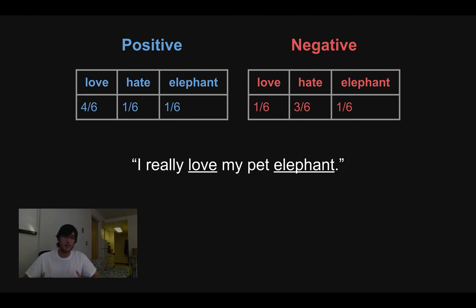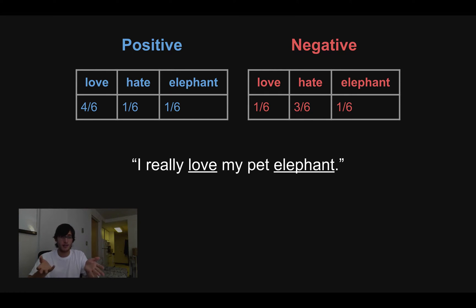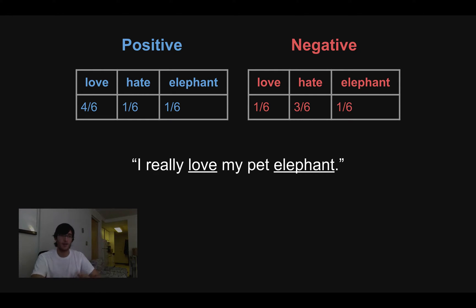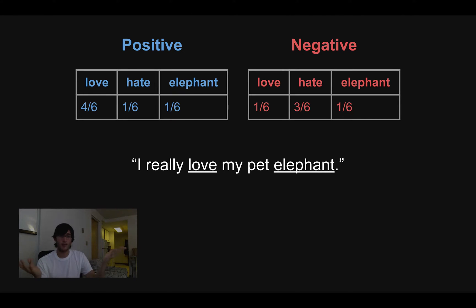Now let's work on some sentences and use this classifier to decide if they're positive or negative. Let's look at the sentence 'I really love my pet elephant.' This sentence has the word 'love' and 'elephant,' and it doesn't have the word 'hate.' Here's how we decide: first, we assume the sentence is positive and ask, what's the probability of getting a sentence with 'love,' 'elephant,' and not 'hate' from the positive table? Then we assume it's negative and compute the same thing from the negative table. We compare which is more likely and make a decision.